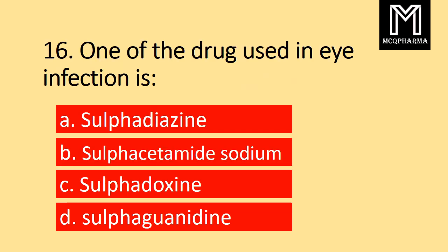Question number 16. One of the drugs used in eye infection is: Option A sulfadiazine, B sulfacetamide sodium, C sulfadoxine, D sulfaguanidine. Correct answer: Option B sulfacetamide sodium.